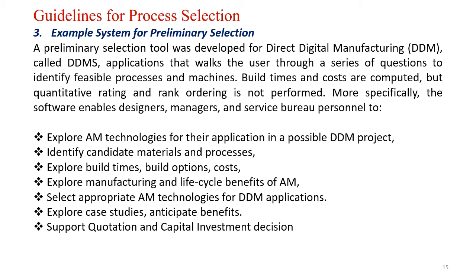Now we will look at an example system for a preliminary selection. A preliminary selection tool was developed for direct digital manufacturing (DDM) processes — this tool is called DDMS. The application makes the user walk through a series of questions to identify feasibility and process suitability of the machines. It computes build time and cost for that building, but quantitative rating and rank ordering is not performed.